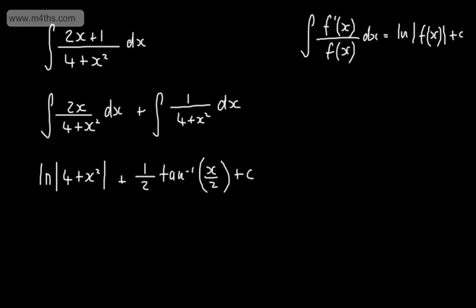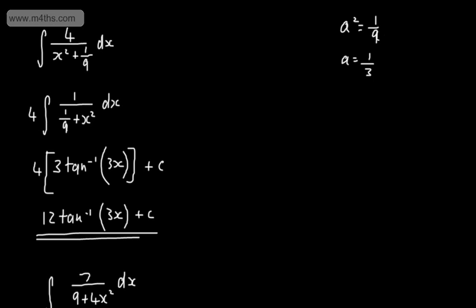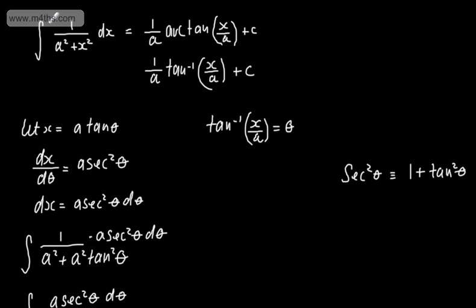So there's a brief introduction to using standard results to find the integral of particular inverse trig functions. To recap, the integral of 1 over a squared plus x squared with respect to x is 1 over a arctan of x over a plus a constant, or 1 over a times the inverse tan of x over a plus a constant. This will be given to you — it simply uses basic trig and basic integration techniques to find the integral.